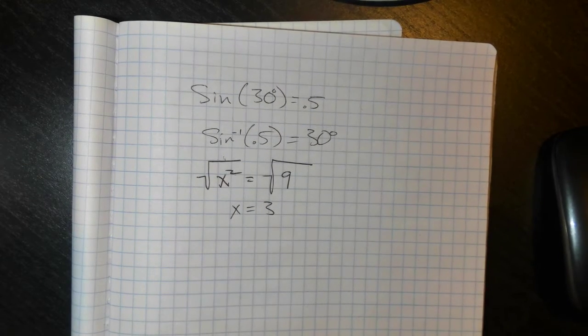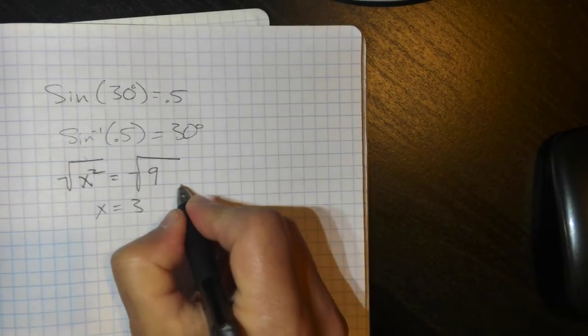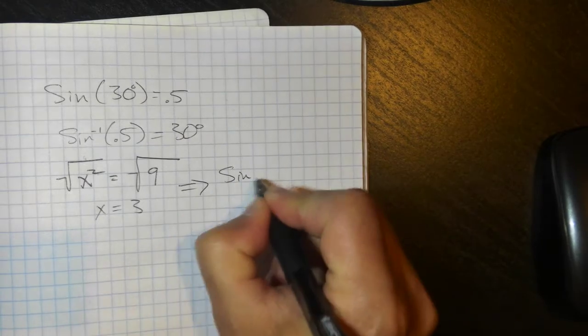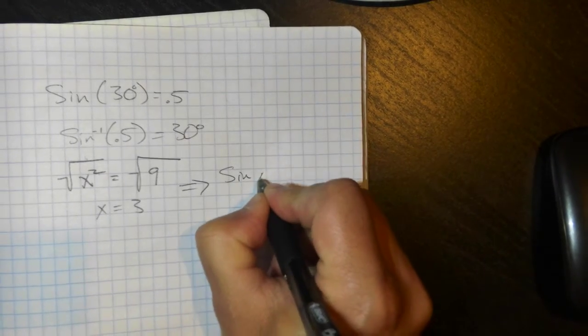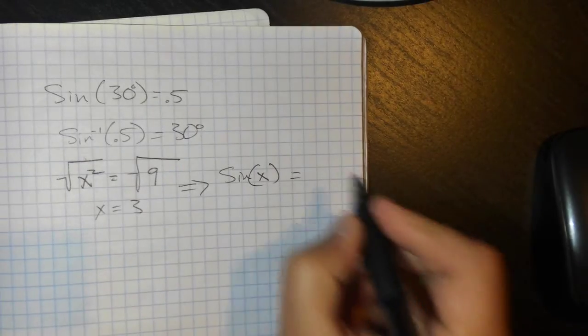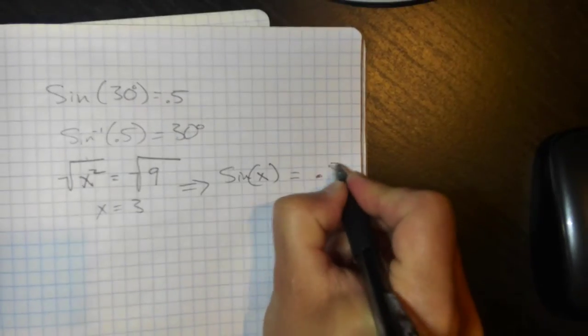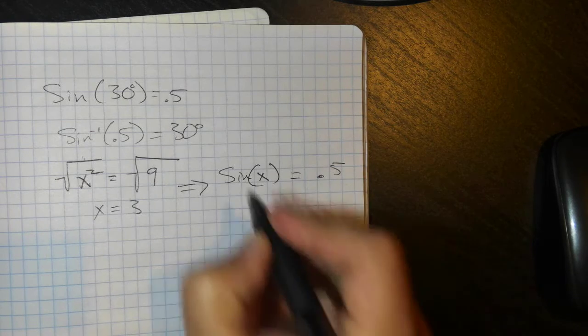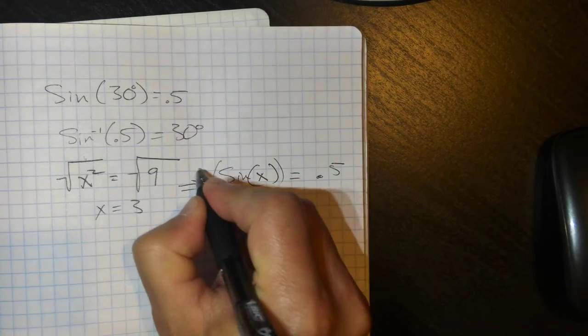It's the same thing with inverse sine. Similar to it is if I have sine of x is equal to, and I'll use the same numbers again, 0.5, how would I get the x by itself? I would inverse sine both sides.